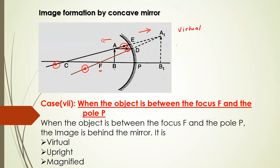That is why I am getting a virtual image. The intersection of the extended rays behind the mirror gives the image position. The arrowhead shows it is an upright image — it is not inverted anymore. The virtual image is always upright. Comparing object AB and image A'B', the image is magnified. So I am getting a virtual, upright, and magnified image when the object is between the focus and pole of the concave mirror.